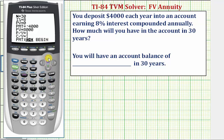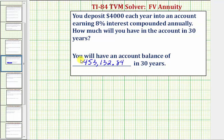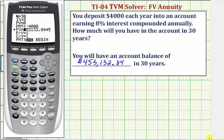Now we go back up to future value. We're trying to solve for future value, so we press Alpha, Enter. Notice how this amount is positive, because this is the amount of money that will come back to us from the account, which is $453,132.84 to the nearest cent. So you will have an account balance of $453,132.84 in 30 years.